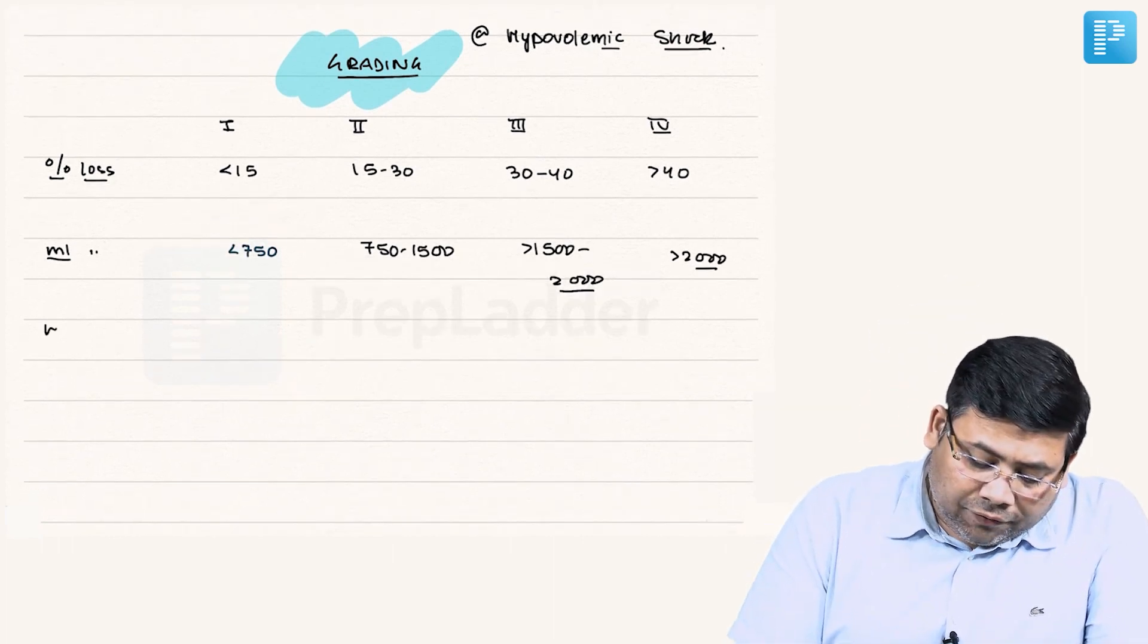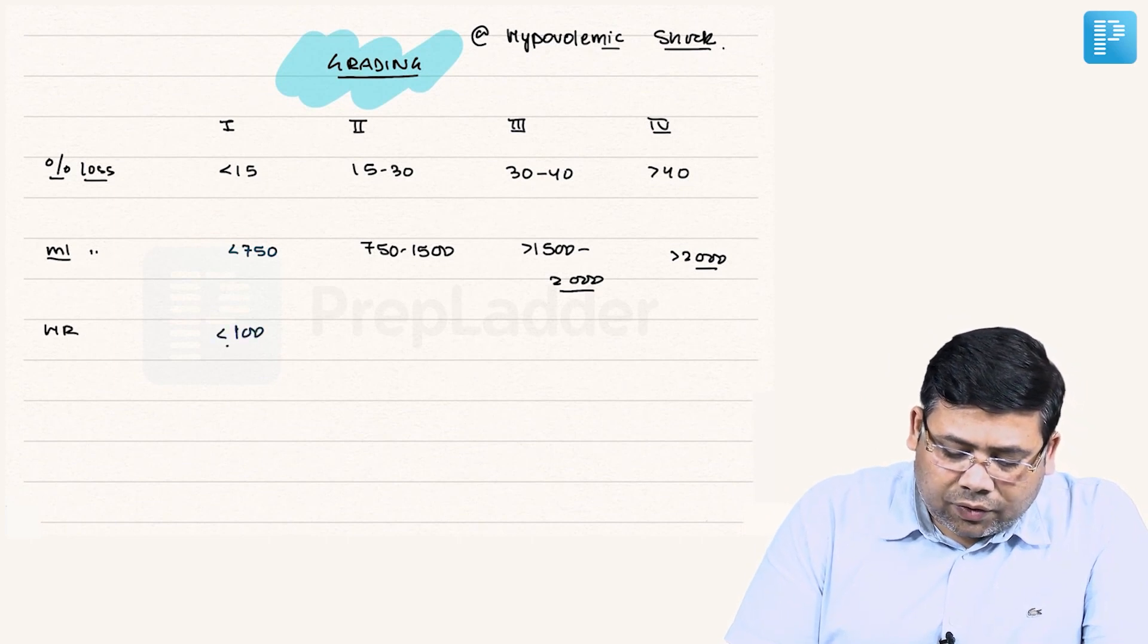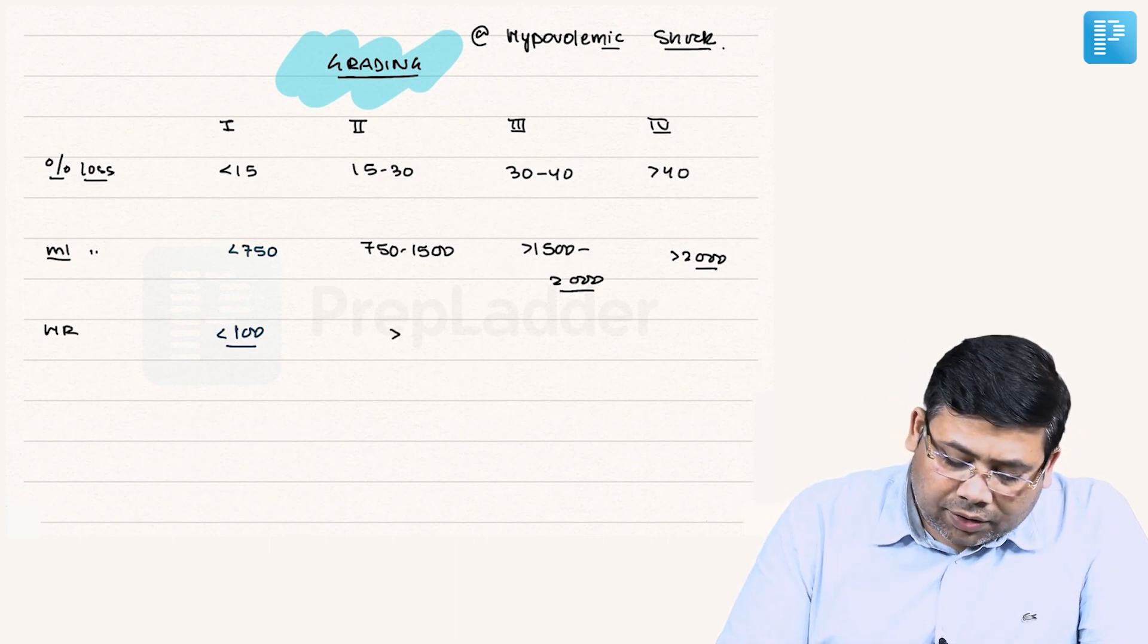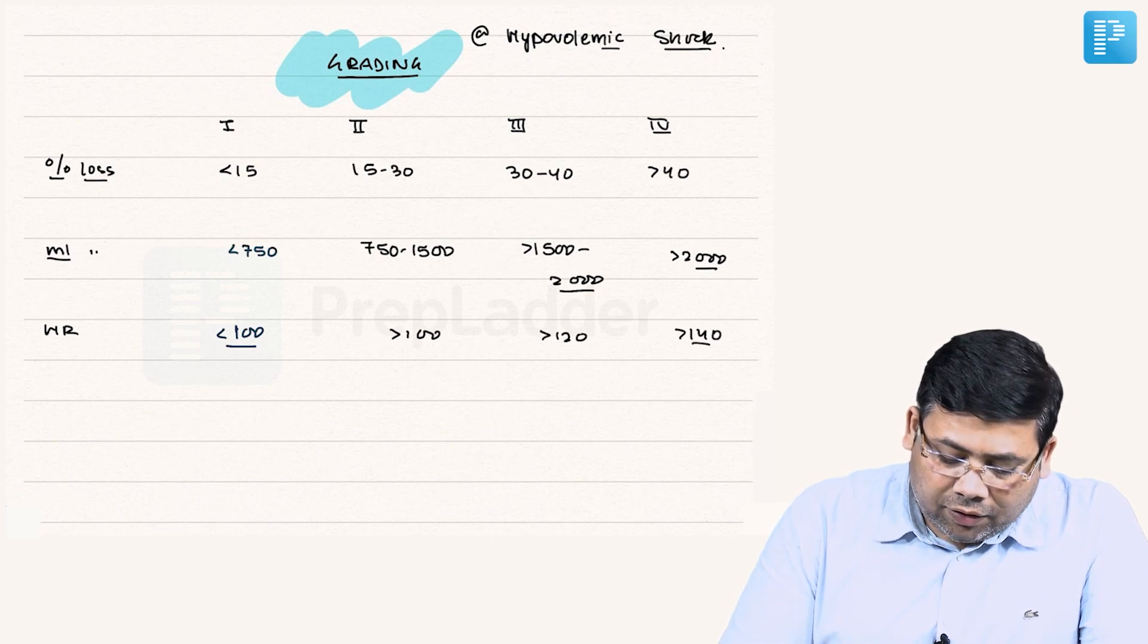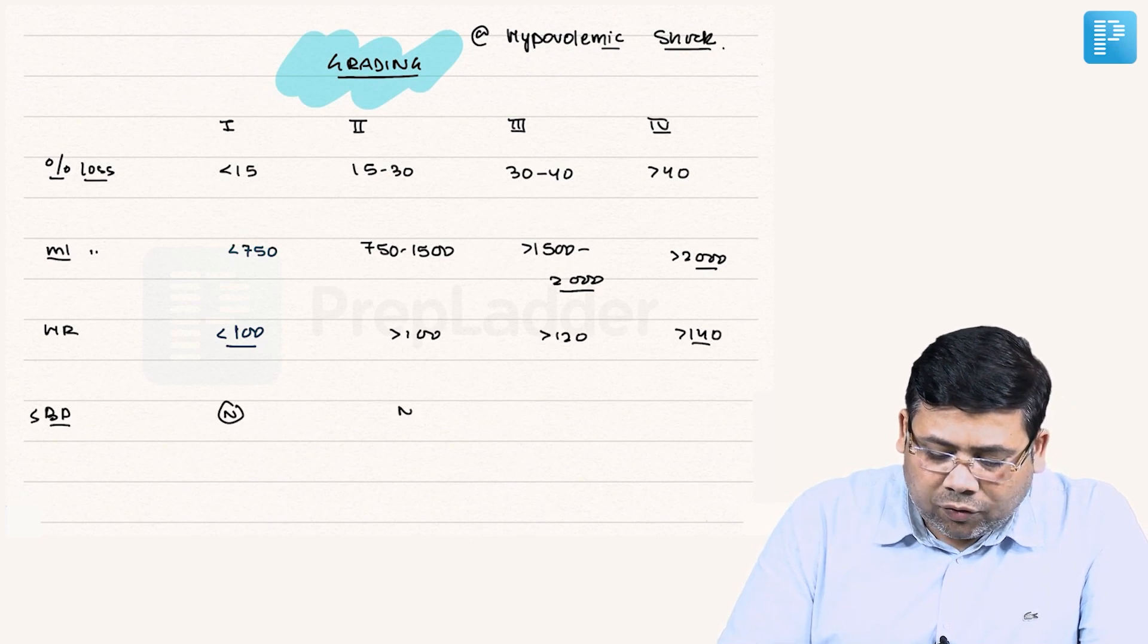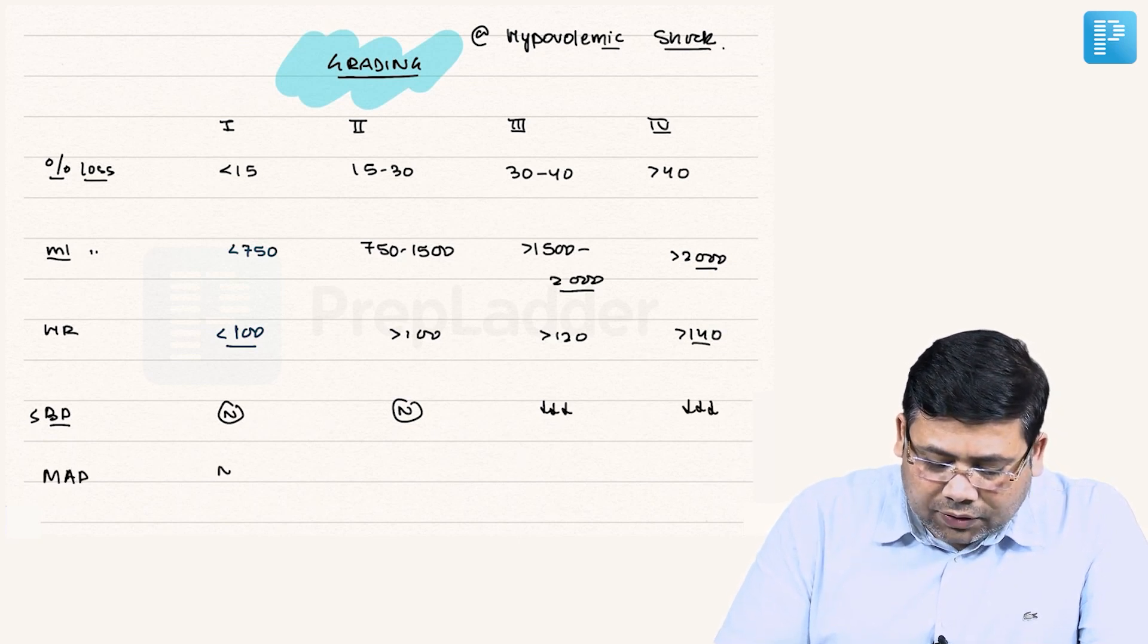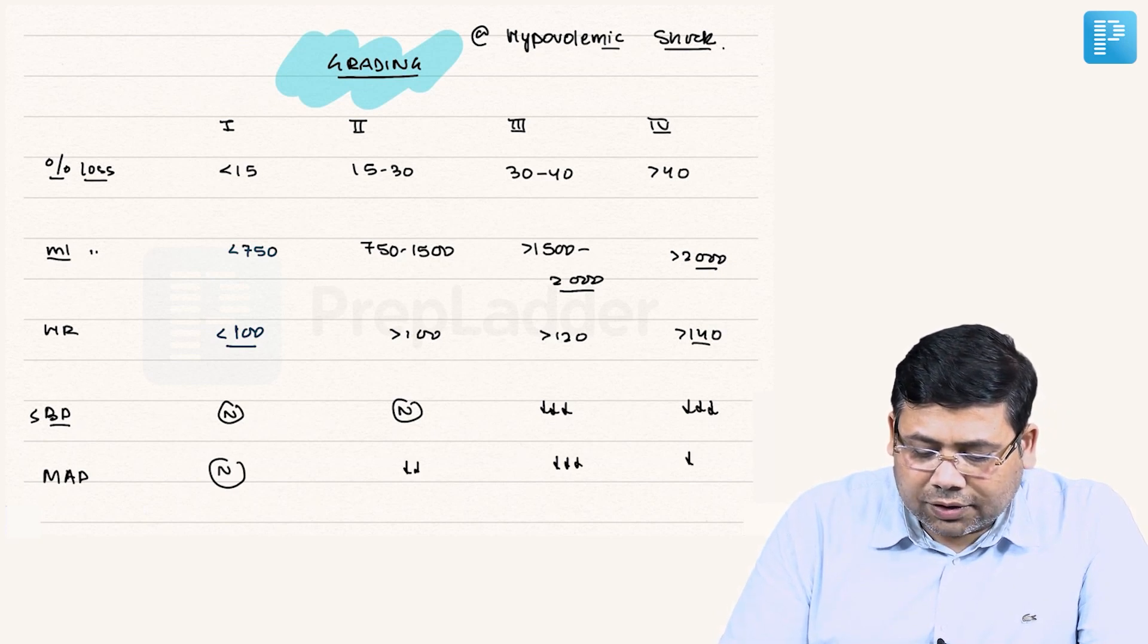When we talk about heart rate: it is less than 100 for grade 1 - more or less looking like a compensated normal patient. More than 100, more than 120, and more than 140. When we talk about BP, systolic BP is normal for grade 1, normal for grade 2, and it falls from grade 3 onwards. If we talk about mean arterial pressure, this is normal but from grade 2 onwards it starts to fall.